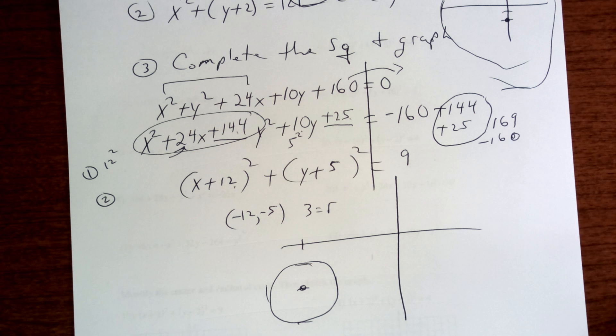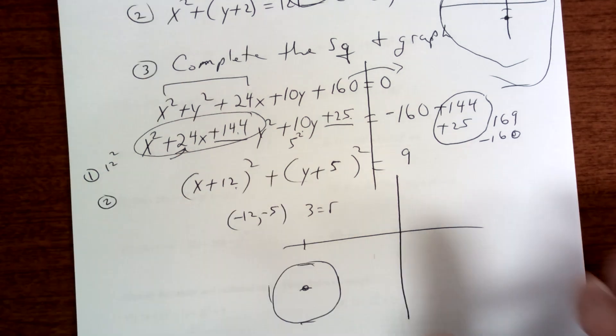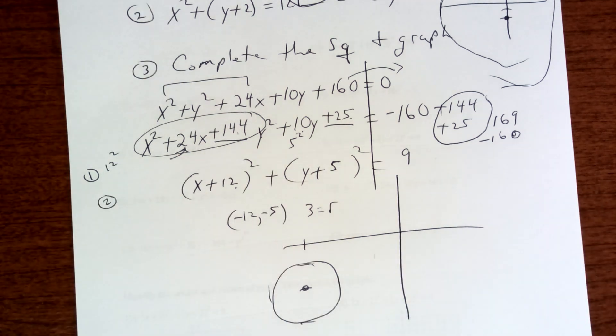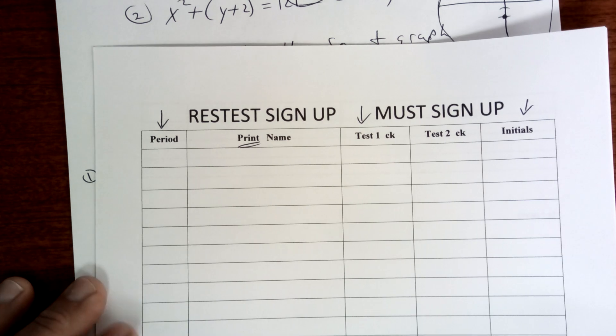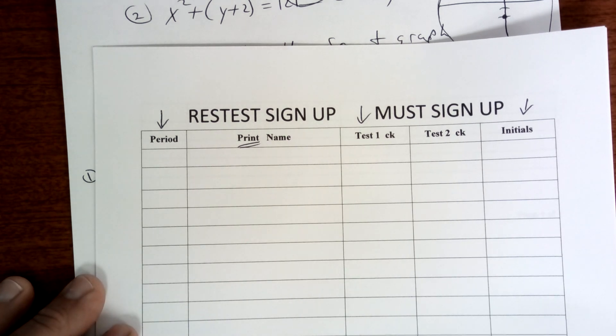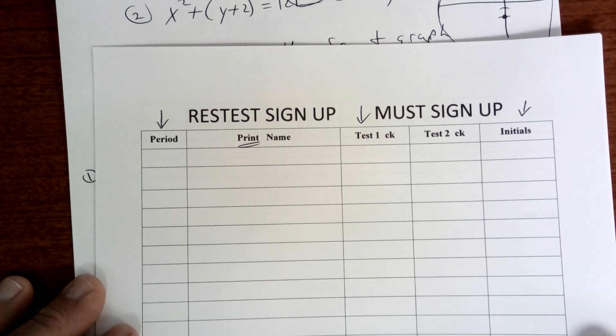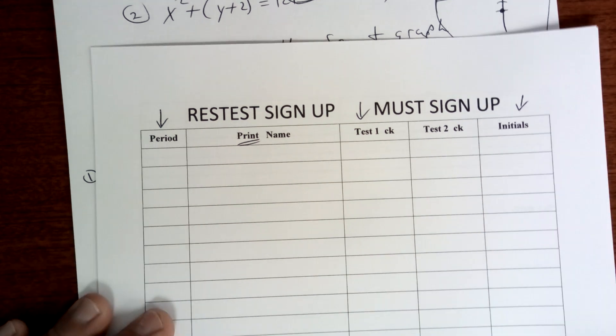Any questions on how to complete the square? All right, one other thing before we begin. If you want to retake test number one, it's going to be on the board. If you do not sign up, you will not be allowed to take it, or it will not be counted. One or two. Okay, so you must have your name up here.